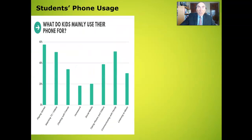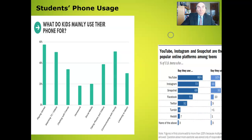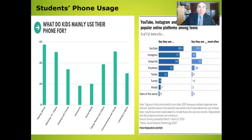Another 44% say they go online several times a day, meaning roughly 9 in 10 teens go online multiple times per day, according to the Pew Research Center. The question then becomes, how do teens use their phones? 57% of kids report gaming as their number one use, 50% regularly watch TV and/or movies, and 50% communicate with family and friends. However, only 18% of kids complete homework assignments on their phones, which was the least popular use. The most popular platforms among teens are YouTube and Snapchat, according to the Pew Research Center.